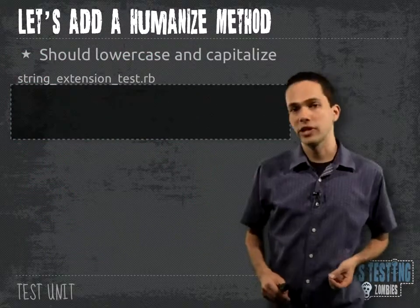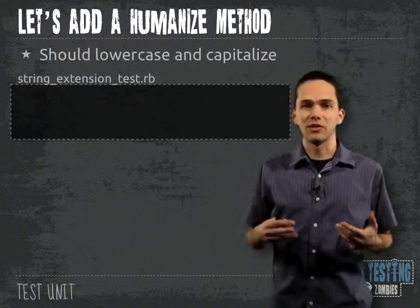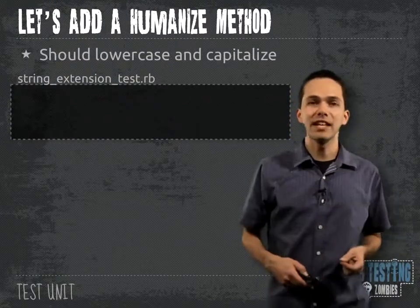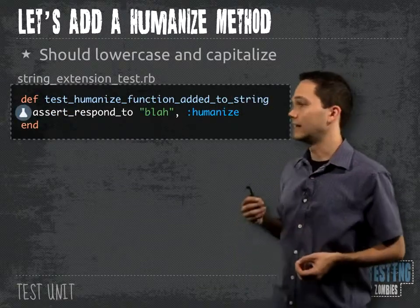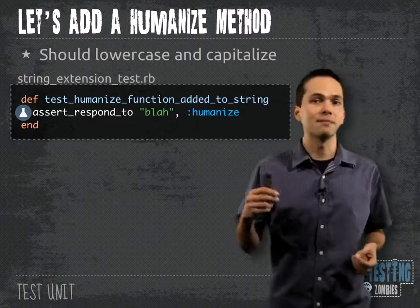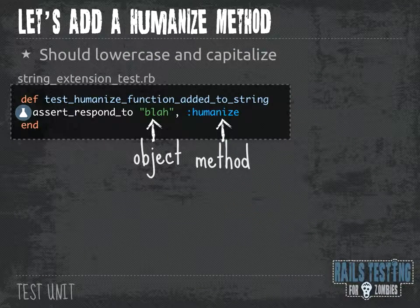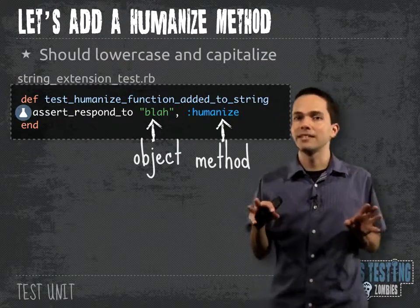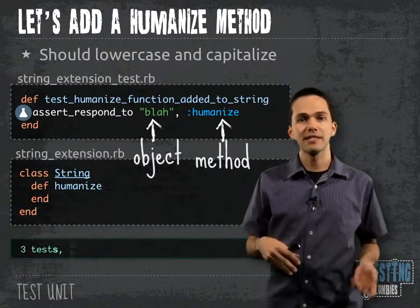Let's walk through one more example before you get to the challenges. We're going to create a humanize method that will lowercase and capitalize a string. Inside our string extension test, we're going to write a basic test using assert_respond_to to make sure the string class responds to the humanize method — sending in an object and testing that it has a humanize method. Rather than defining the entire function, we're just going to write enough code to make the test pass, which in this case is simply defining the function. We run the test and it passes.